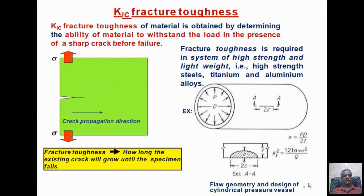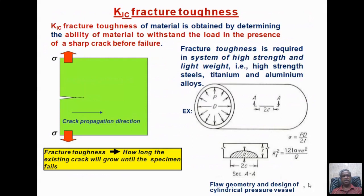K1c fracture toughness: K is stress intensity factor, C refers to critical, and 1 is Mode 1 crack deformation. K1c fracture toughness of a material is obtained by determining the material's ability to withstand a load in the presence of a sharp crack before it fails. For example, if you know a pipe has a crack of length 2c, you can use the fracture toughness value to predict whether the crack will propagate or cause failure. Fracture toughness tells you how long an existing crack will grow until the specimen fails.